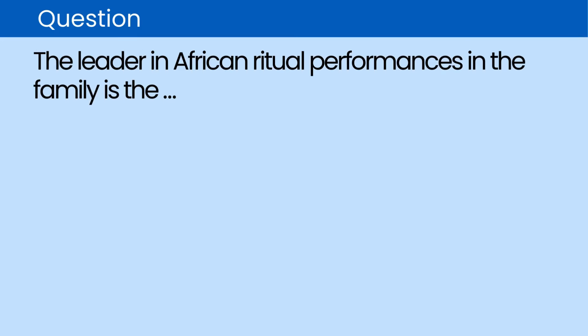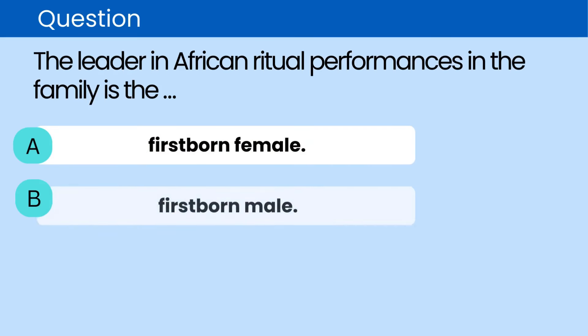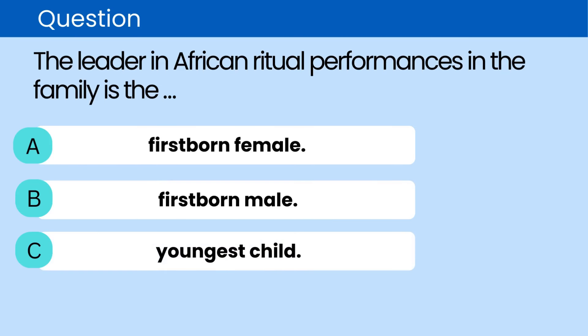Question: The leader in African ritual performances in the family is the. A. Firstborn female. B. Firstborn male. C. Youngest child. D. Chief. The correct answer is B. Firstborn male.